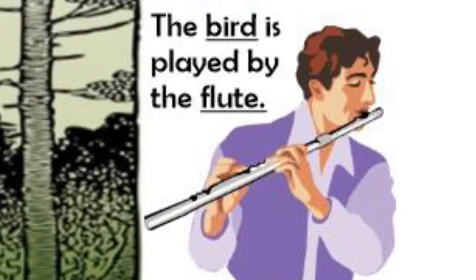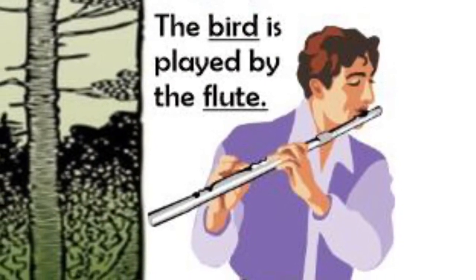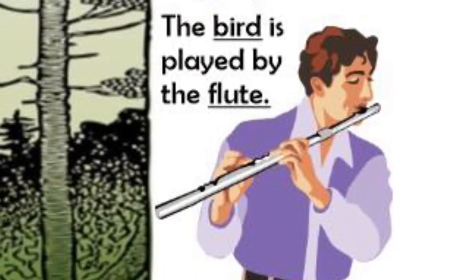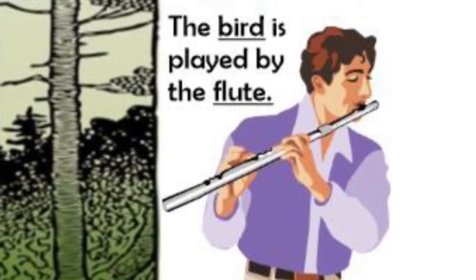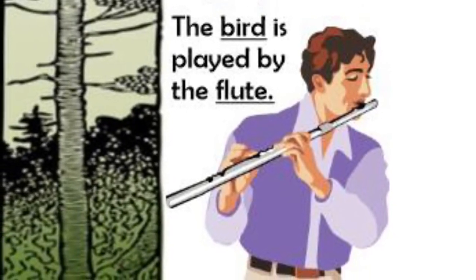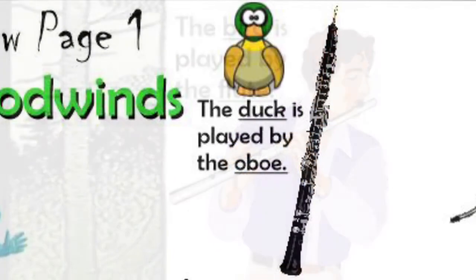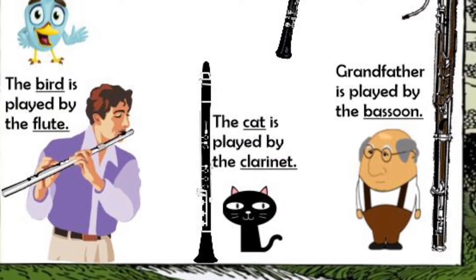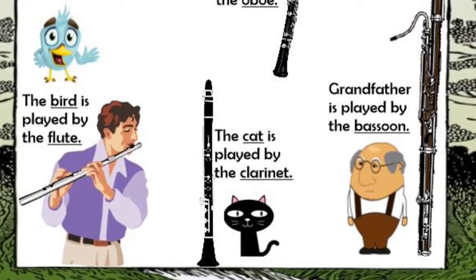The bird is played by the flute, so here's a picture of the flute. The duck was played by the oboe, so here's a picture of the oboe. Next, the cat is played by the clarinet — here's a picture of the clarinet.